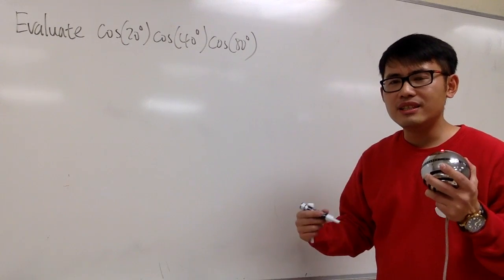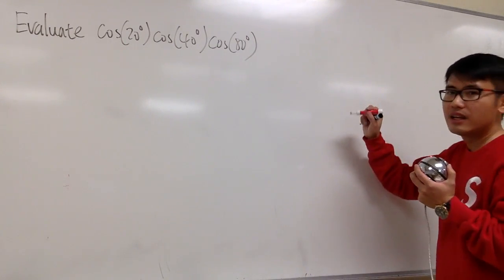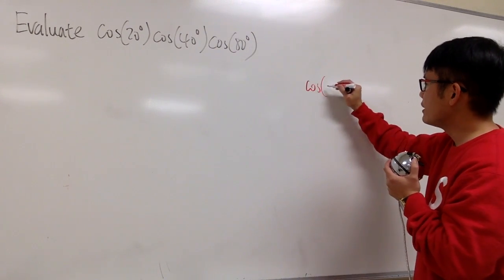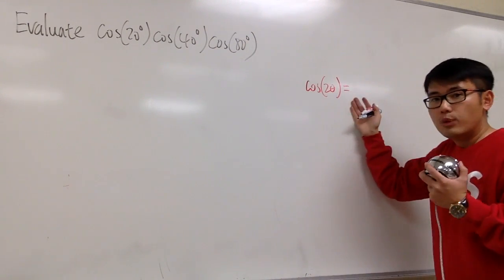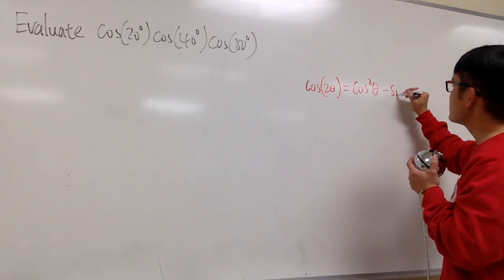Maybe we should look at the double angle formula, and let's talk about it right here on the side. First of all, we know the double angle formula for cosine, so let me write it down, cosine of 2θ. This right here, we have three versions of it, and let me just write down the first version, which is cosine squared θ minus sine squared θ.